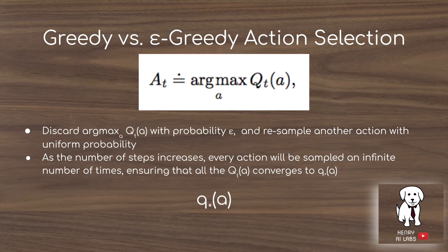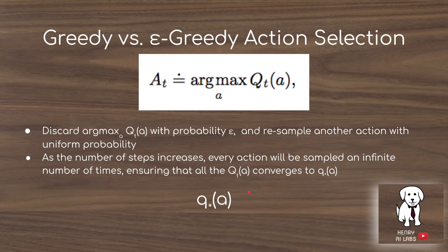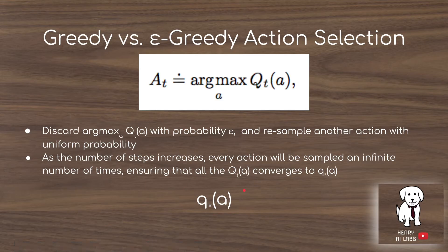Epsilon greedy action selection has a probability epsilon of not selecting the maximum-value button, and instead samples another button with uniform probability. For example, if the purple button has the maximum expected reward, you sample from green, red, and blue each with probability one-third. As the number of steps increases, every action will be sampled an infinite number of times, and the estimated value Q(a) converges to the optimal value Q*(a).